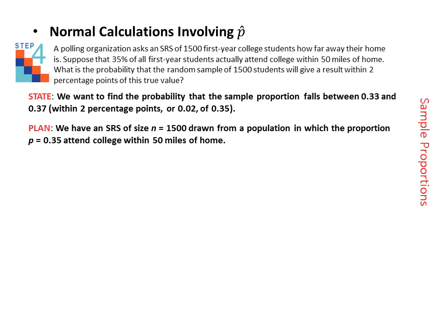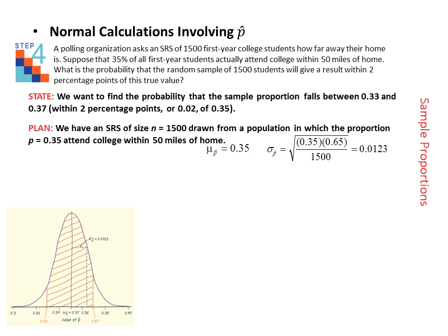Plan involves making sure the conditions are appropriate for you to actually use the normal calculations. Otherwise, your probabilities that you calculate may not be accurate. So in plan, we know that we have a simple random sample. We have a sample size of 1,500 and we know that p is 0.35. So we should be able to find the mean and standard deviation. From the last slide, the mean is equal to the population proportion, which is given at 0.35. The standard deviation can be calculated using the formula from the last slide to be 0.0123.